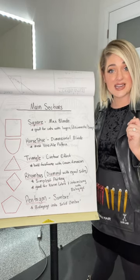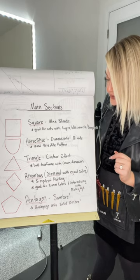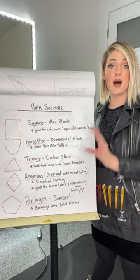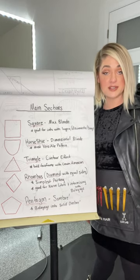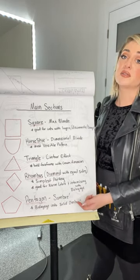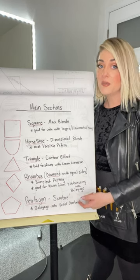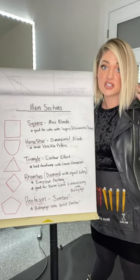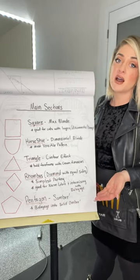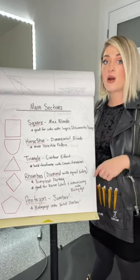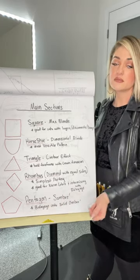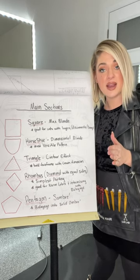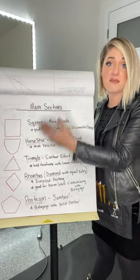The rhombus pattern is also great for feather-painted techniques inside of foil. Lastly there's the pentagon, which creates what I consider a sombre effect — balayage into a solid ombre with all ends blonde. This is probably the most classic look, giving you dimension into a solid platinum at the bottom. A lot of pictures you see hashtagged air touch probably look like this pentagon pattern. You'll have to take the class to really know exactly what these patterns are.